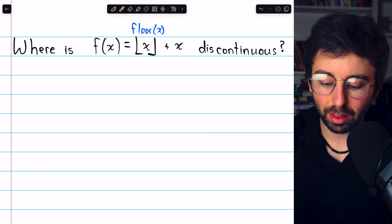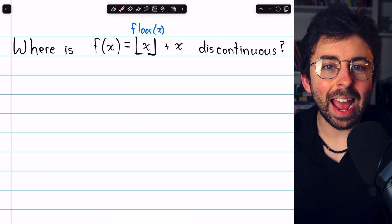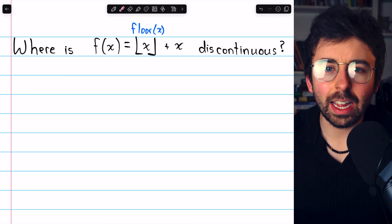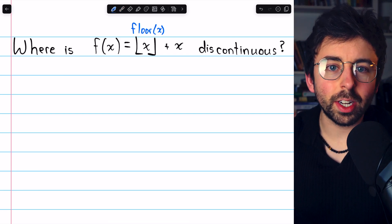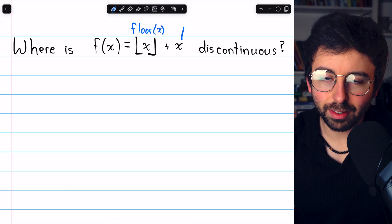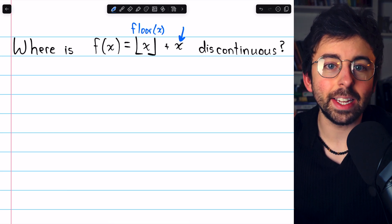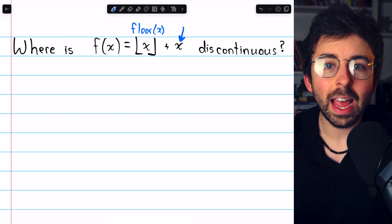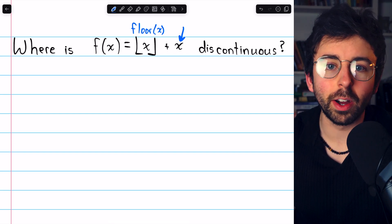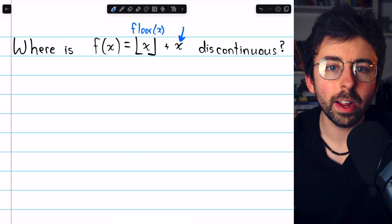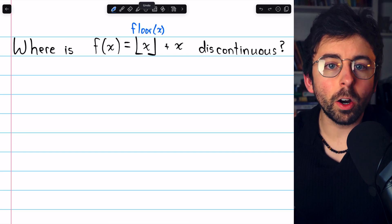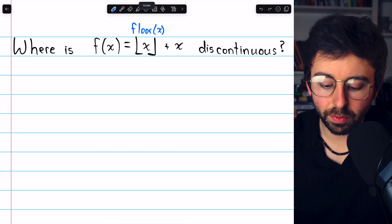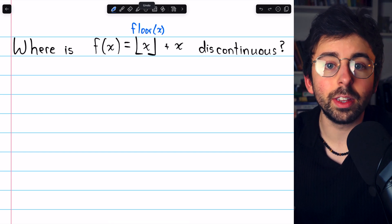What if we take the floor function and add x to it? What does that look like, and where is it discontinuous? This is a rather straightforward question because adding x certainly does not create any new discontinuities. x is just a simple linear function that's continuous everywhere, so all of the discontinuities of f(x) are only there because of the discontinuities of the floor function.